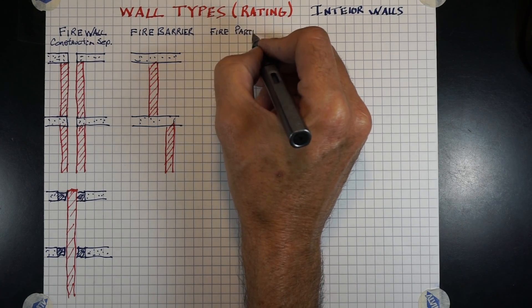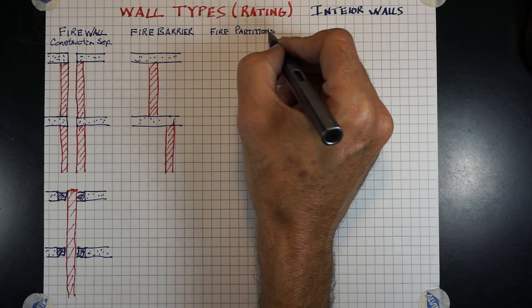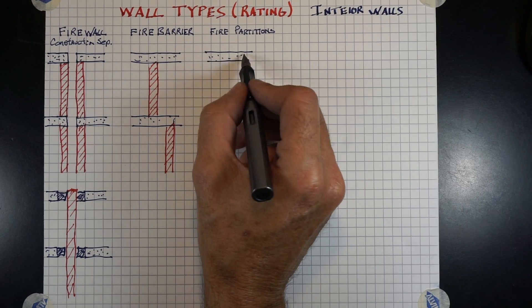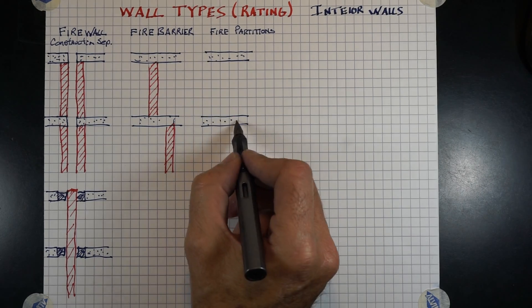Fire partition. Again, we have our floor below and our roof or structure above. A fire partition should go from structure to structure.